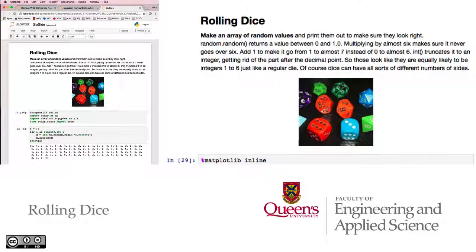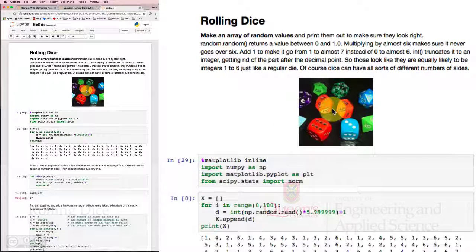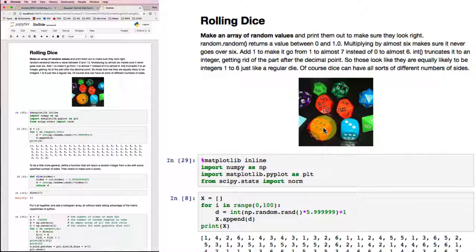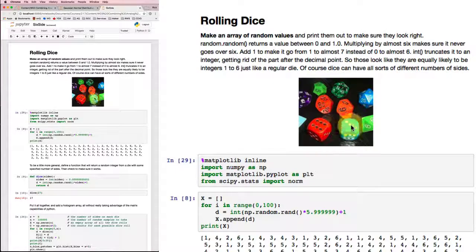We all know that if we're rolling dice, we expect to get a uniform distribution. So with a six-sided die like this, we expect that the values 1 through 6 will come up about equally often. And of course, dice can have all sorts of different numbers of sides, as those of you who play games with odd-shaped dice will know.